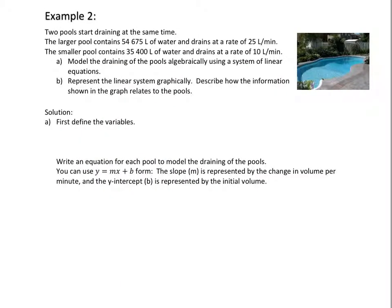In example two, we have two pools draining at the same time. A larger pool containing 54,675 liters of water at the start drains at a rate of 25 liters per minute. And a smaller pool that contains 35,400 liters of water at the start drains at a rate of 10 liters per minute. We're going to model the draining of the pools algebraically using a system of linear equations and then represent the system graphically to find the solution and what that solution represents in terms of the question.